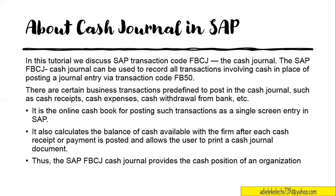The cash journal is an online cash book for posting such transactions in a single screen — that's the beauty of it. You can also see the real-time balance of your cash on hand and the history of transactions. The cash journal also gives you the functionality to print receipts or print cash journal documents if that is a requirement. The transaction code used to post your cash journal transactions is FBCJ.